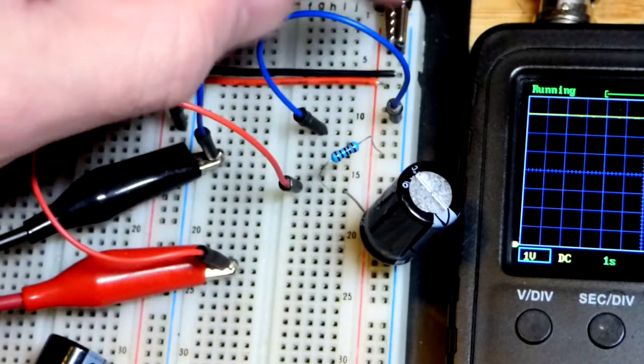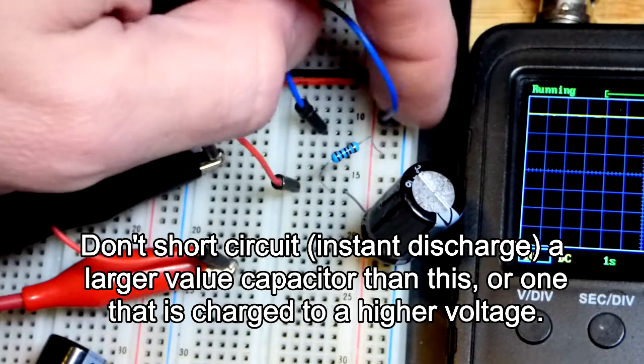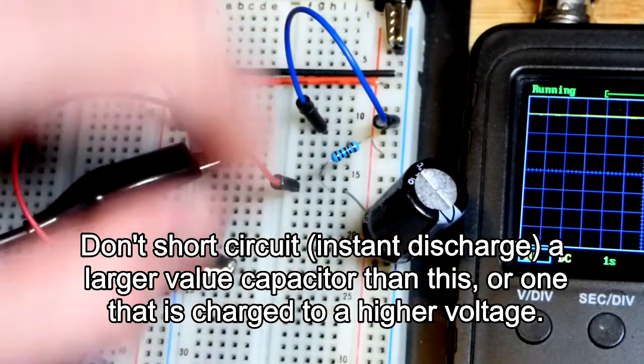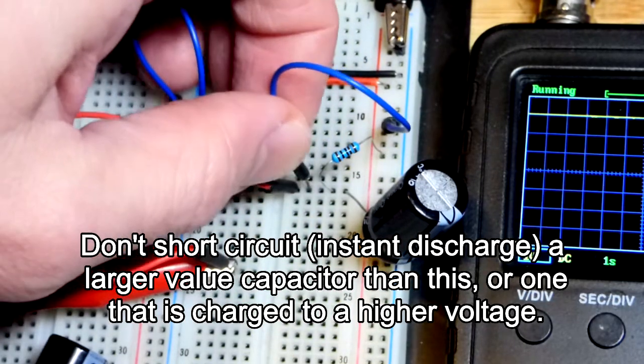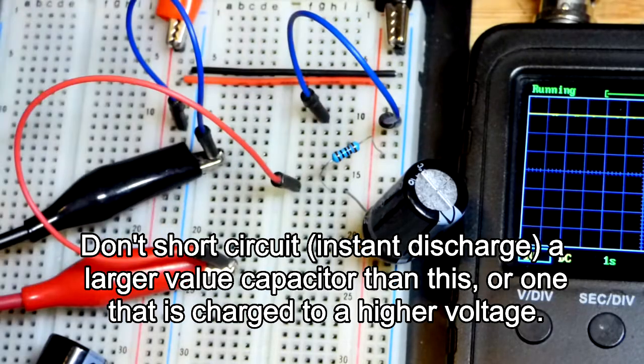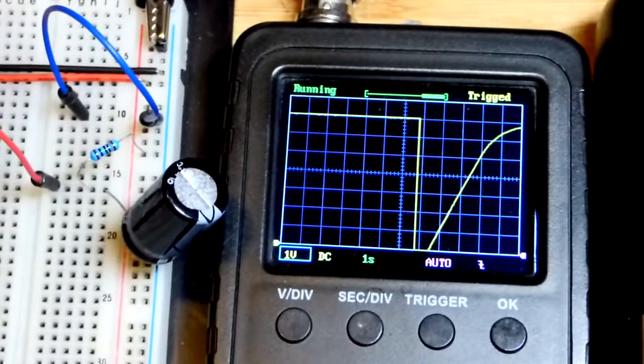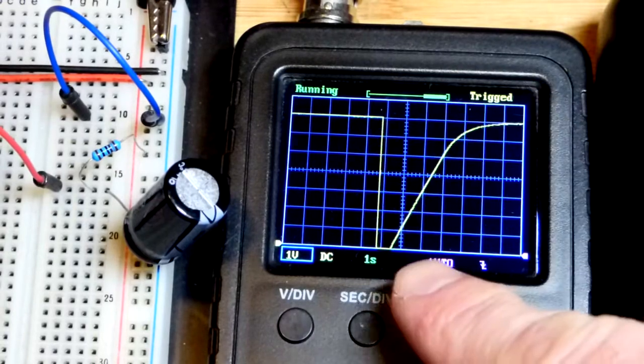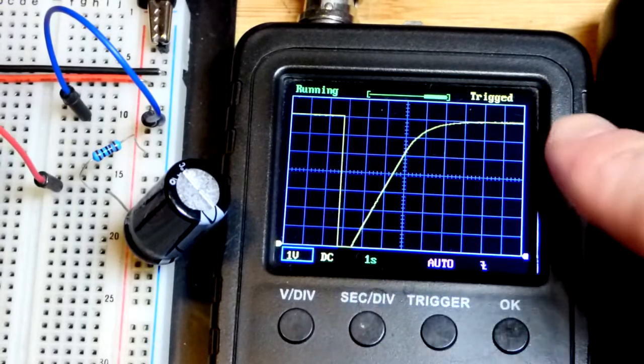That jumper will let us discharge the capacitor instantly because there'll be ground on both sides when I make the connection. You'll see on the oscilloscope the voltage drop instantly when we discharge it and then it charges.